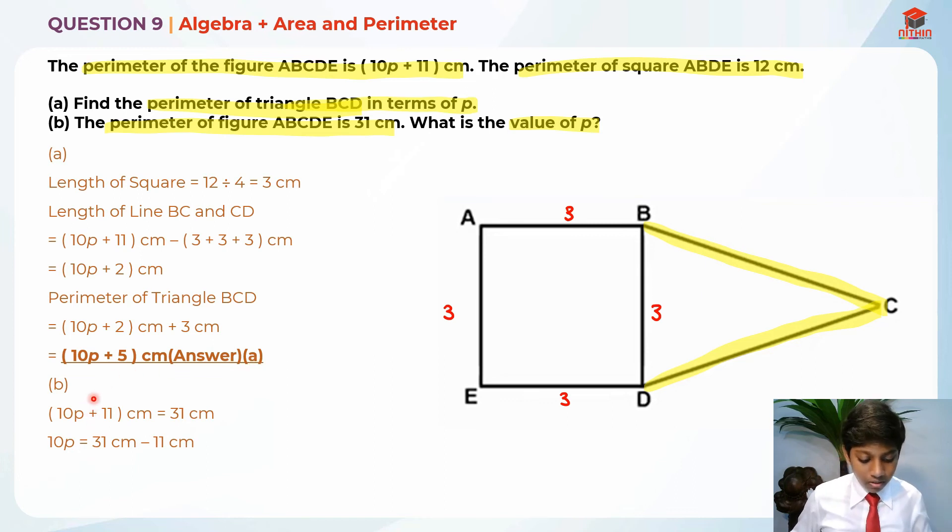So we can find what is 10p. When we bring it over the equal sign, it will become a minus. So 31cm minus 11cm is equal to 20cm. So 10p is equal to 20cm. Now you can find the value of p by taking 20 divided by 10, which is 2cm. And 2cm is the answer for part B.